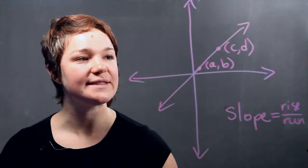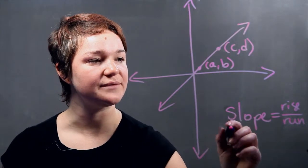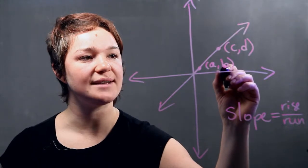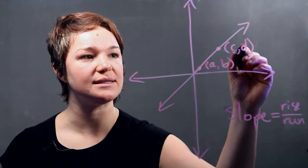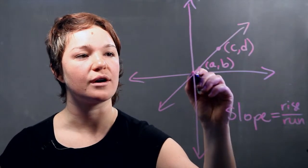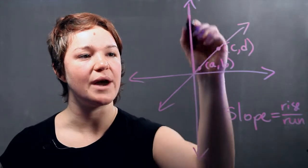So to figure out the slope, what you do is figure out the rise. The rise is measured as the difference between D and B, along the y-axis.